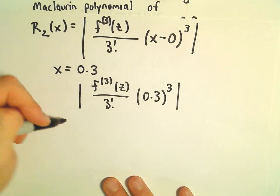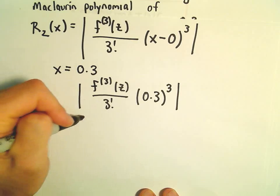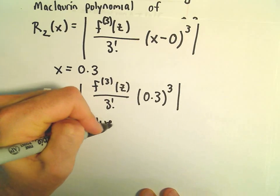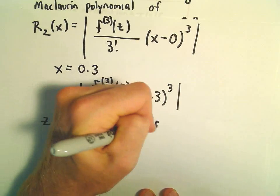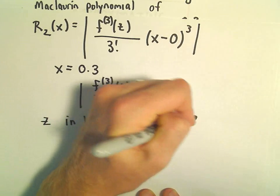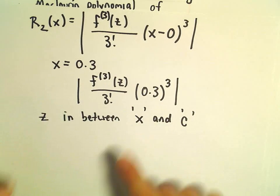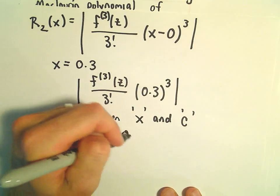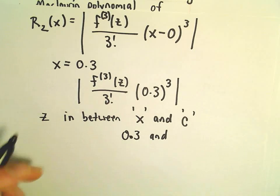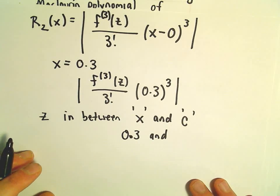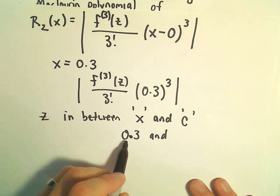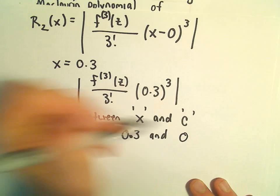So our x value is what we're plugging in, so that's 0.3, and our c value is where it's centered at. So z is some number in between 0.3 and 0.